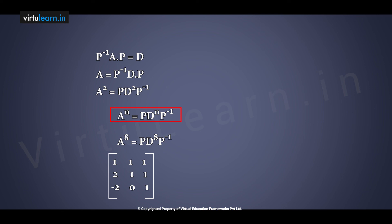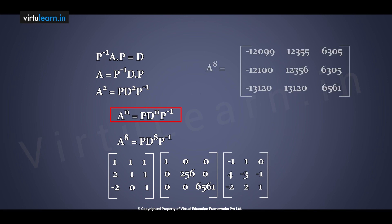D power 8 means raising each diagonal element to the power 8: 1 power 8 is 1, 2 power 8 is 256, and 3 power 8 is 6561. So D power 8 equals diag(1, 256, 6561). Then multiply P into D power 8 into P inverse to get A power 8. Similarly, A power 4 can be calculated the same way.